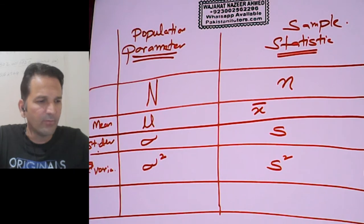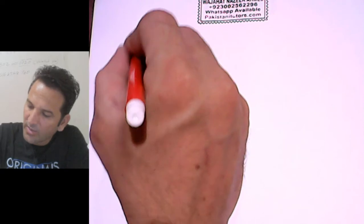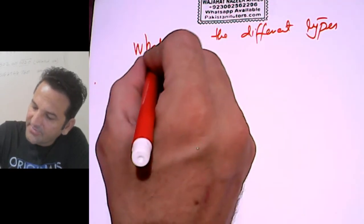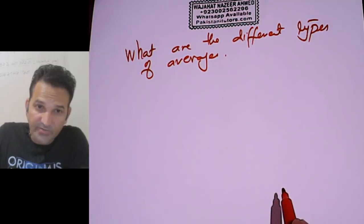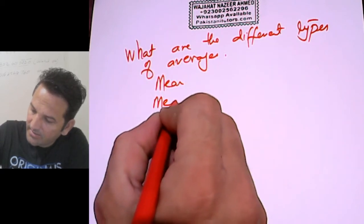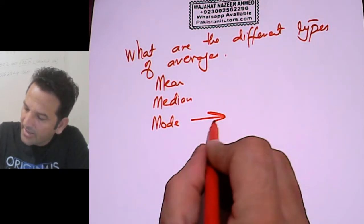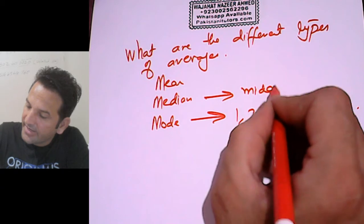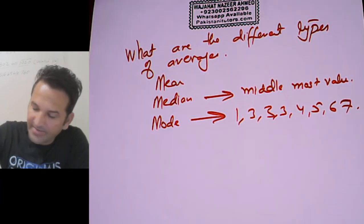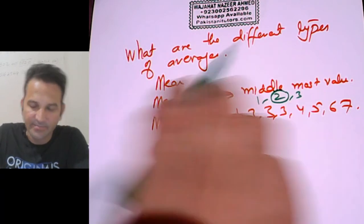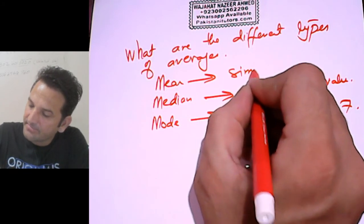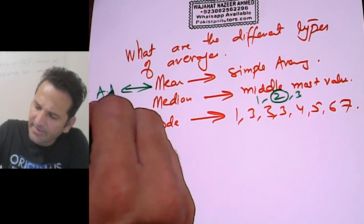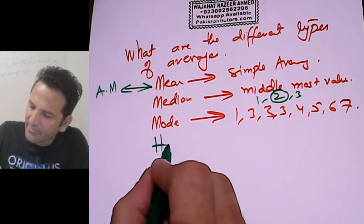Now we are moving to our last part: the different types of averages. There are three main types of averages — mean, median, and mode. Mode is the most repeated value in a dataset. Median is the middle-most value — for example, if 1, 2, and 3 are written, 2 is the median. Mean is the simple average, also called arithmetic mean. We also have two more means: harmonic mean and geometric mean.